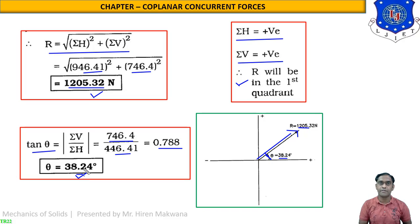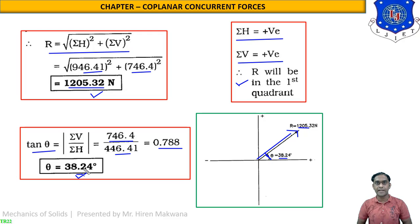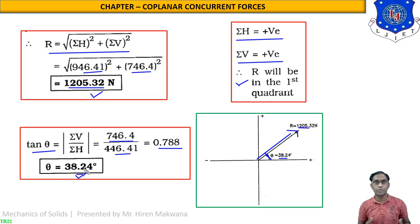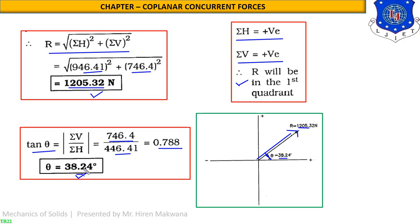This is the master sum based on a regular hexagon. Similar problems based on a regular pentagon or other polygons can be asked in your GTU exam, so be careful and practice this numerical. This is our method of resolution of more than two concurrent forces. We will be coming up with the next lecture with more numericals. Regular practice will be required. Goodbye, students. Thank you very much.